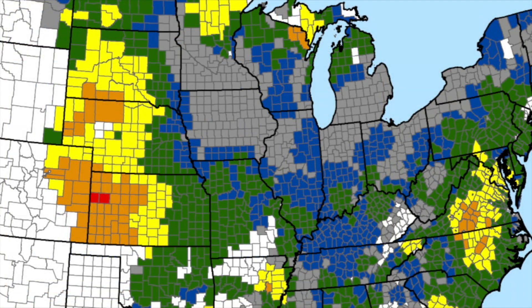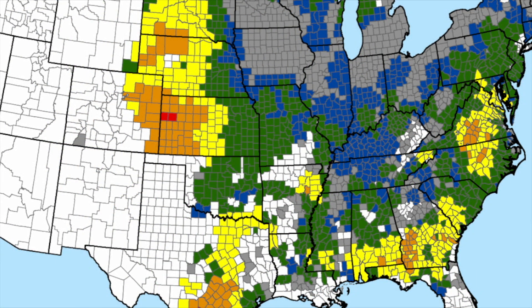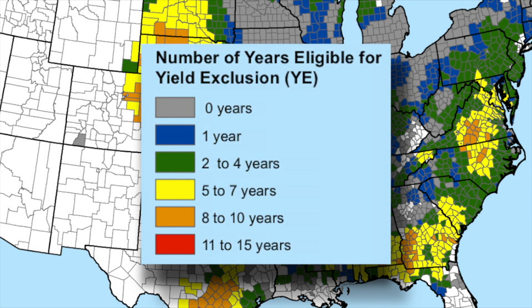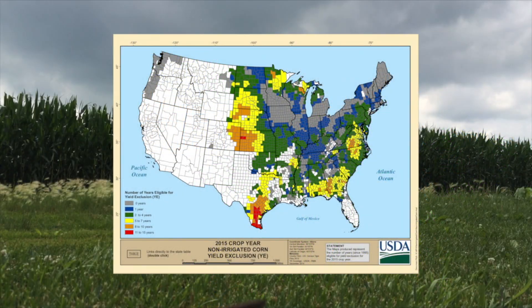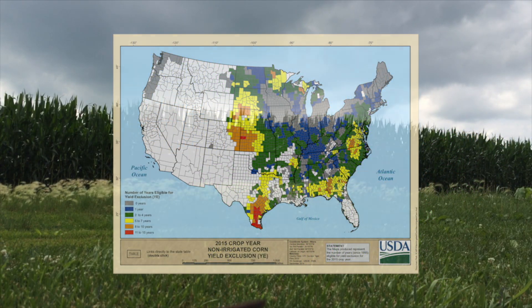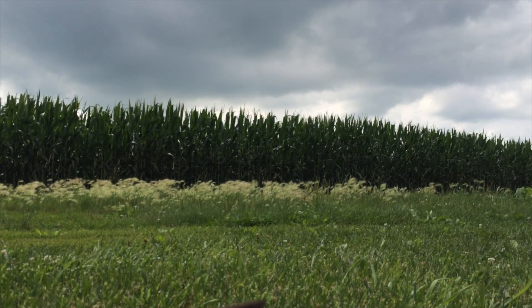Here is how YE allows a producer to exclude a yield from their APH calculation. If the farm is in a county, or contiguous to a county that had a prior year yield less than 50% of its prior 10-year average, then the farm is eligible for a yield to be dropped from the APH calculation. The yield dropped is from the year the county experienced the 50% or greater decrease.